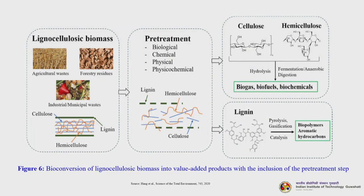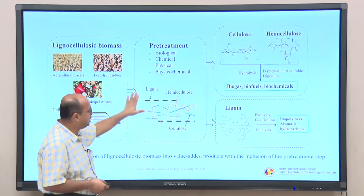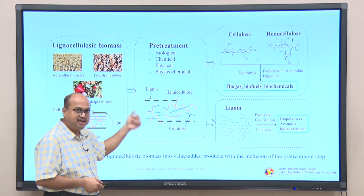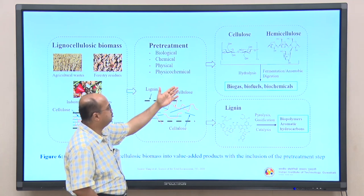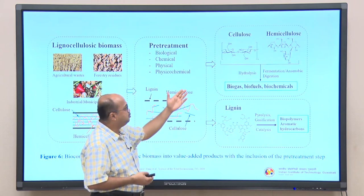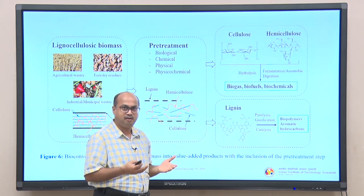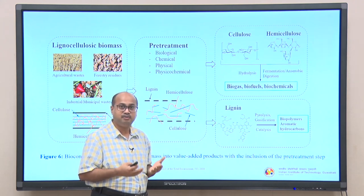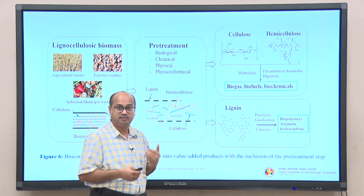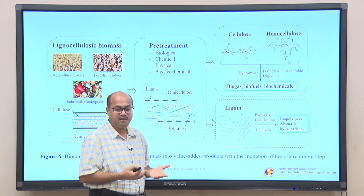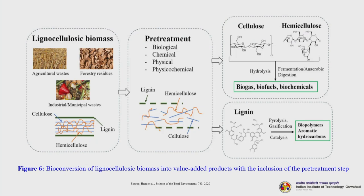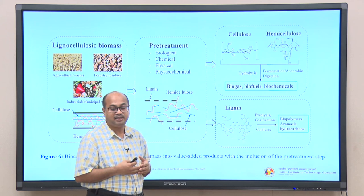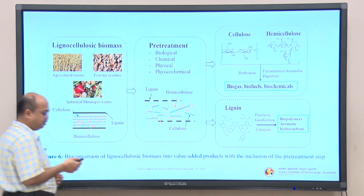The bioconversion flowchart shows biomass being pretreated — biological, chemical, physical or physicochemical — resulting in disintegration of the lignin-cellulose-hemicellulose structure. Cellulose and hemicellulose are then purified and hydrolyzed using biochemical or biotechnological platforms such as fermentation or anaerobic digestion, yielding alcohol platforms including bioethanol and biobutanol, as well as biogas. Lignin can go for pyrolysis or gasification with or without catalysts to produce biopolymers, aromatic hydrocarbons and other value-added chemicals.